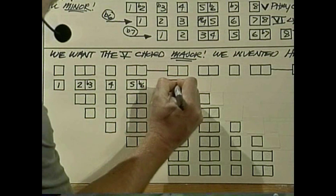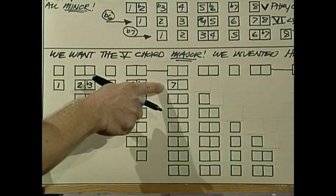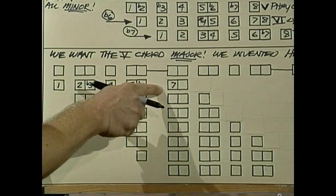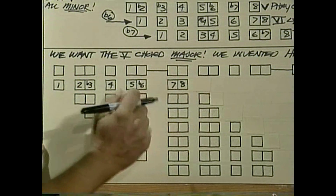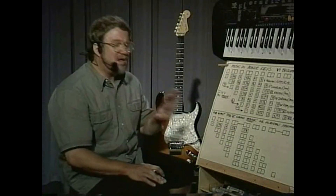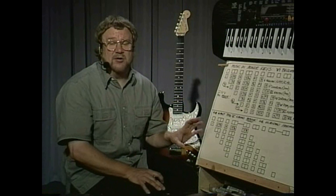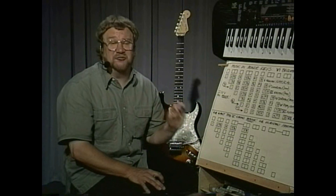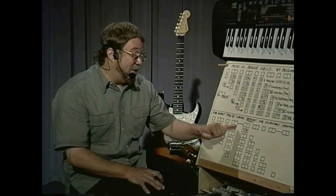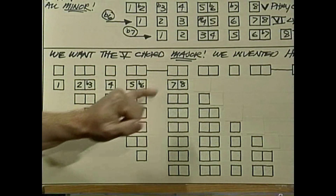Here you skip over two notes and land on the seven instead of the flat seven the way natural minor does. Natural minor had a whole step above the flat six landing on flat seven, then another whole step to eight. Here, we have this step-and-a-half interval from flat six up to seven, then up to eight. The harmonic minor scale is identical to the natural minor scale except it has note number seven in it instead of the flat seven.